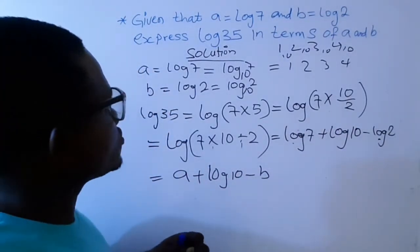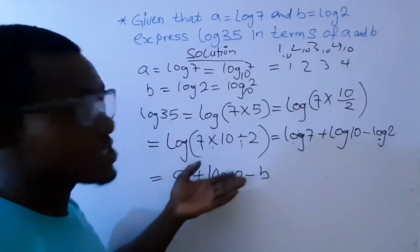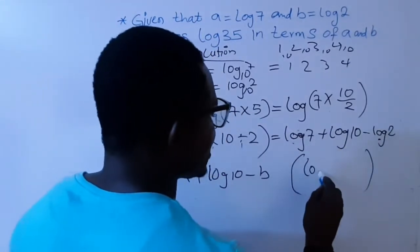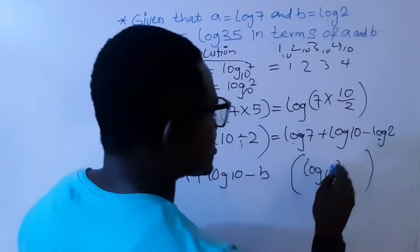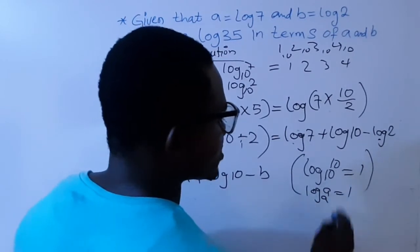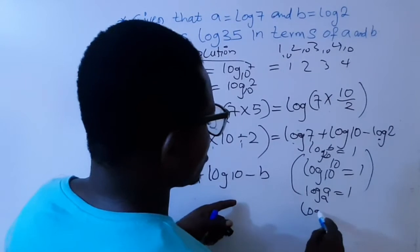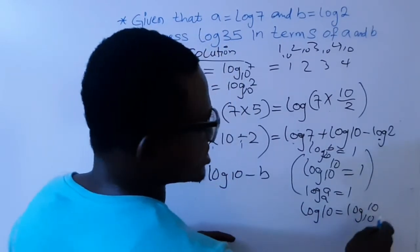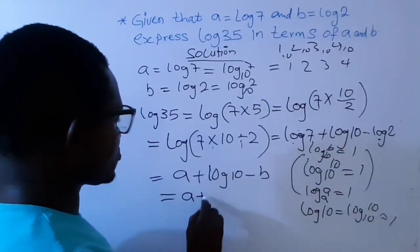And don't forget initially I told you, whenever you have a log without any base, it means it is in base 10. So log 10 is also in base 10. In log rules, when you have log 10, a base is having the same number that is standing, log 10 is equal to 1. Log A base A is equal to 1. Log B base B is equal to 1. So log 10 base 10 equals 1. So I can change this one to 1. So I can now have A plus 1 minus B.